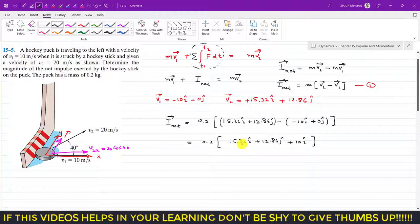Now if we add this i component to the i, we will have 0.2 times, and 15.32 plus 10 is 25.32, this is 25.32i plus 12.86j.